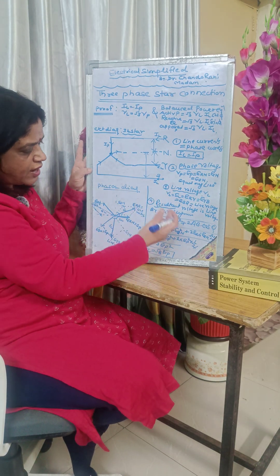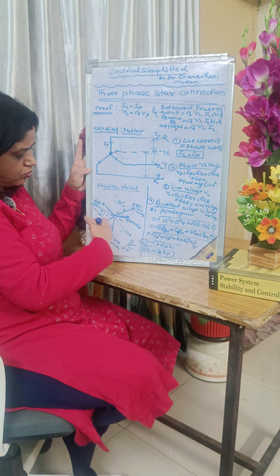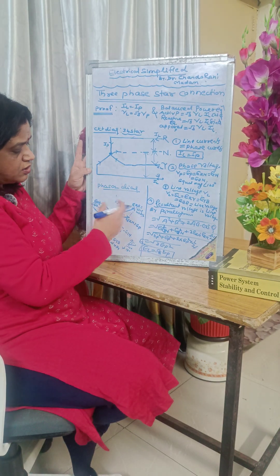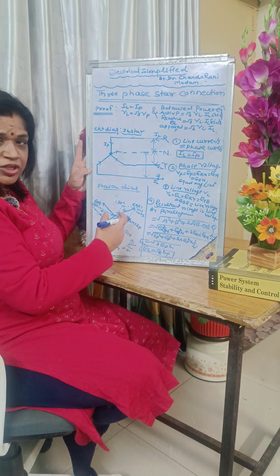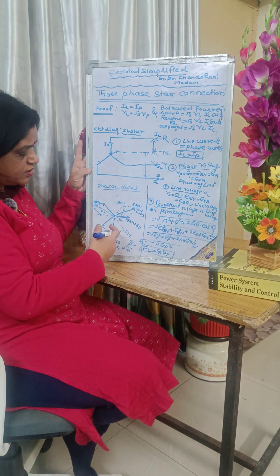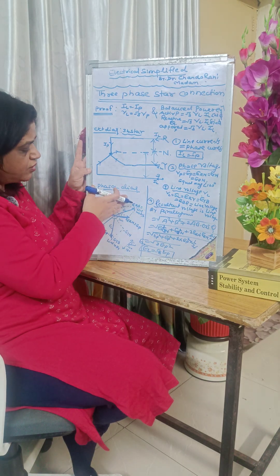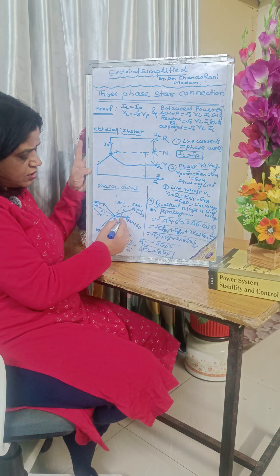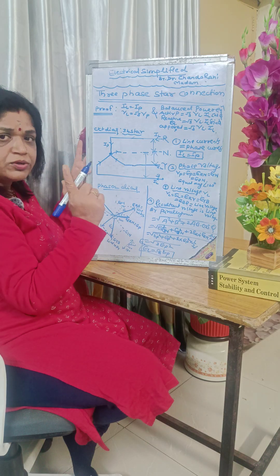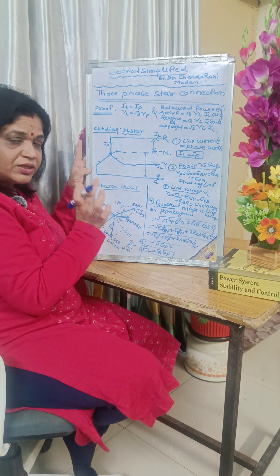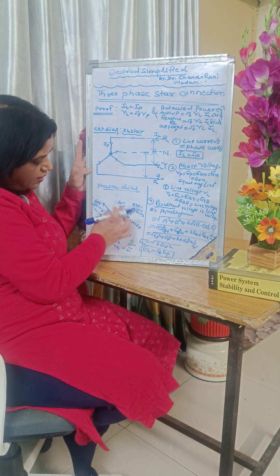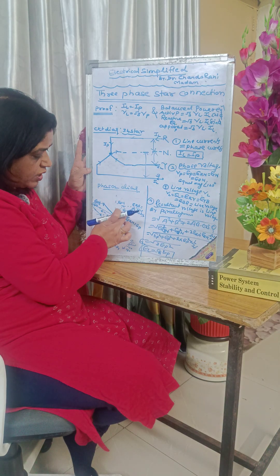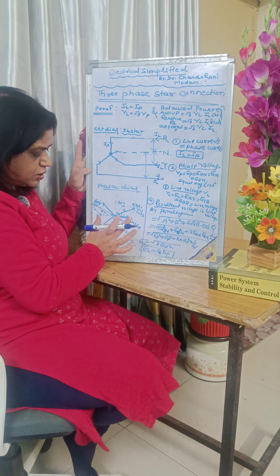The resultant is the line voltage — we will go through this phasor diagram. The phasor diagram is a graphical representation in the plane. The reference vectors are the phase voltages. We will draw the three phase voltages equal in magnitude with 120-degree displacement from each other.